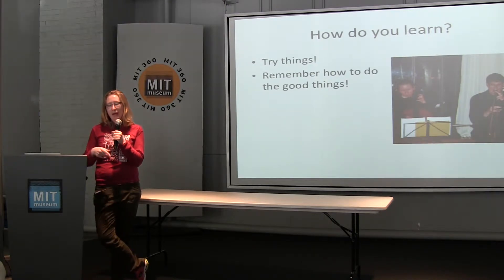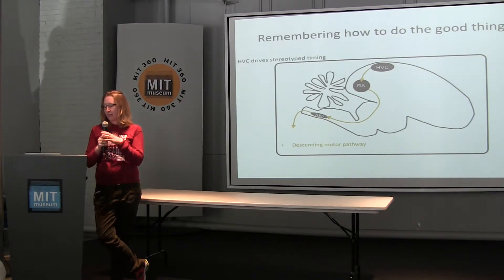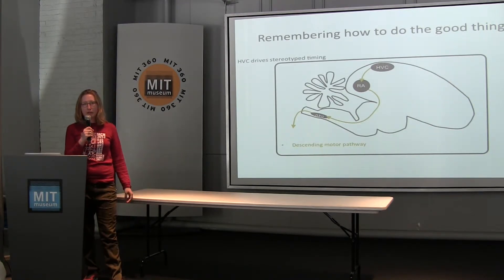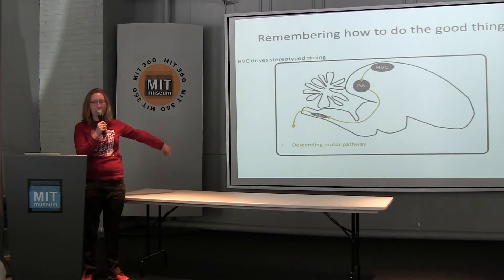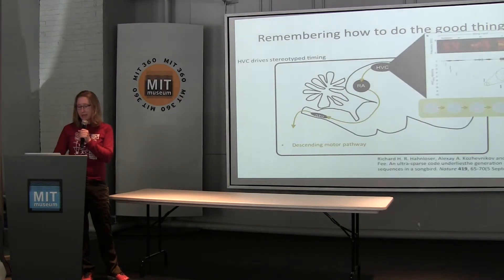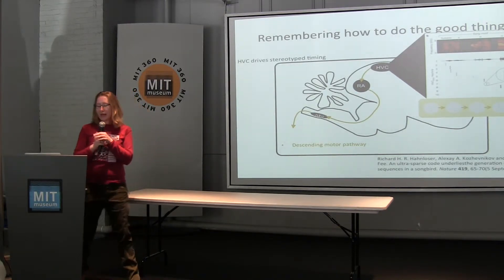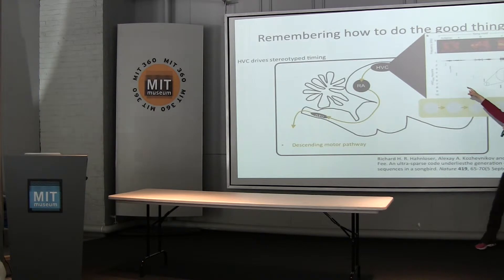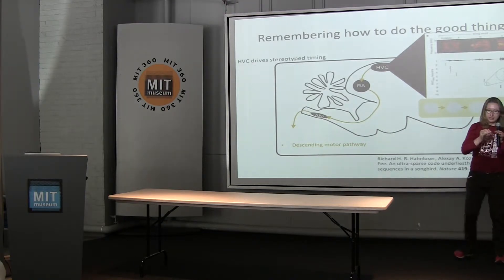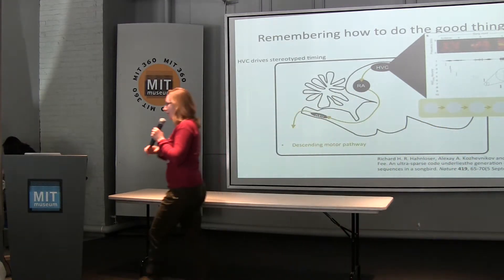And in birds, my lab has discovered which brain circuits are involved in these two aspects of learning. So I'll start with remembering how to do the good song. There's this pathway that we call the descending motor pathway, and this pathway controls the precise timing of the bird's song and stores his best copy of what he's singing. And neurons in this region, if you record them when he's singing, they fire at precise moments of the song in a sequence. So it's like a chain of neurons saying first do this, then do that, then do that, and that produces his song.